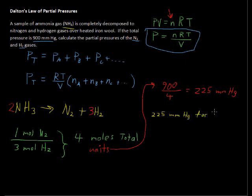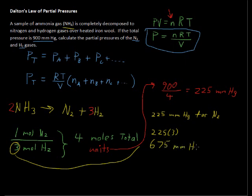That is for the nitrogen gas. That's the partial pressure of nitrogen. We have to multiply by 3 to get the hydrogen. So 225 times 3, or that equals 675 millimeters of mercury for the hydrogen, the H2 gas. So I'll circle those answers.